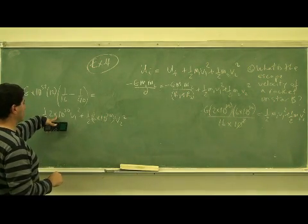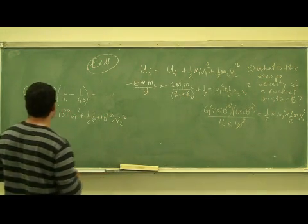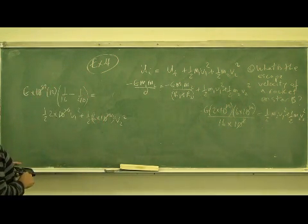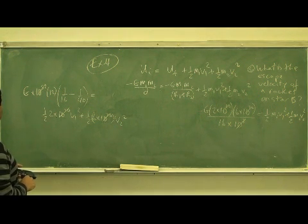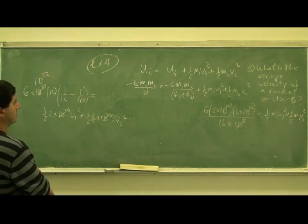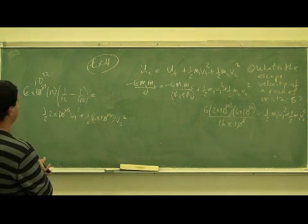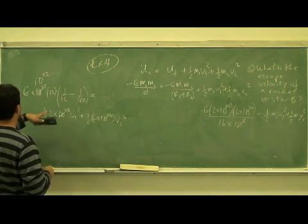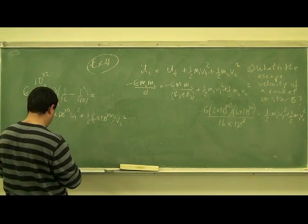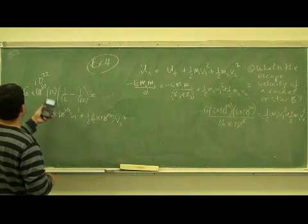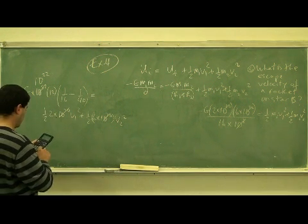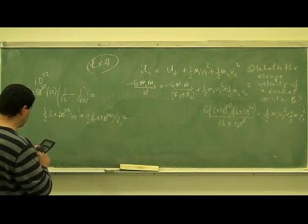The M1 is the lighter star, which is like our sun. This is the heavier star. The 10 to the 30th cancel with this one, becomes 10 to the 22. You have 1 divided by 16 minus 1 divided by 40, which is 0.0375 times 12, times 10 to the power 22.